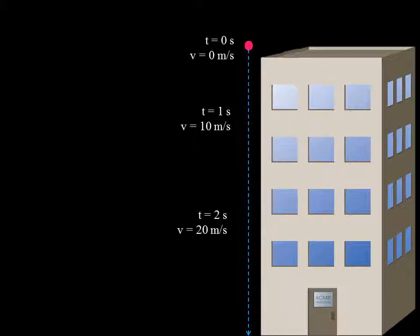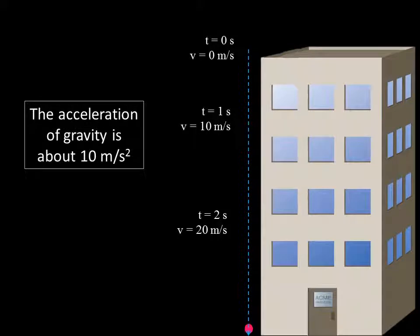For example, suppose you drop a rock from a tall building. At the moment you let it go, its speed is 0 meters per second. After one second, the rock will be falling downward at about 10 meters per second. After two seconds, it will be falling at about 20 meters per second. In the absence of air resistance, its speed will continue to increase by about 10 meters per second each second until it hits the ground. We therefore say that the acceleration of gravity is about 10 meters per second per second, or 10 meters per second squared.